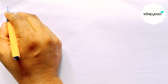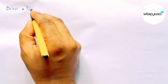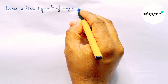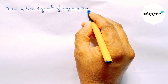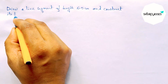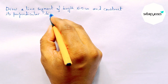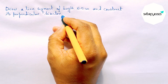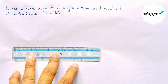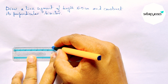Hi everyone, welcome to Say Share Classes. Today in this video we will draw a line segment of length 6.5 centimeters and construct its perpendicular bisector to the line segment AB in an easy way. Please watch the video till the end. So let's start the video — first of all, let us draw a line segment of length 6.5 centimeters.